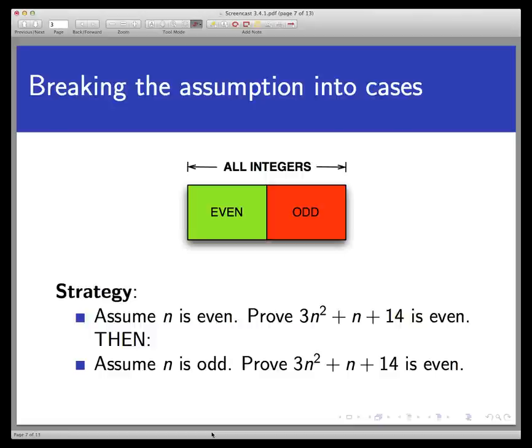This strategy is known as proof by cases. It's useful in situations where you need to prove a result and your assumptions don't provide you with enough information, but when the objects you're working with can be split into a finite number of cases that don't overlap. For example, if you're proving something about integers, then every integer is even or odd so you could do two cases: one for when the integer is even and one for when it's odd. We'll see more examples of cases in later videos.